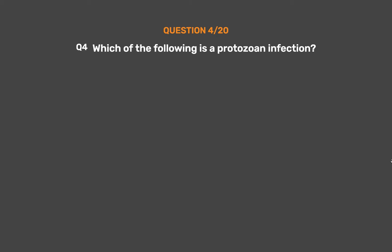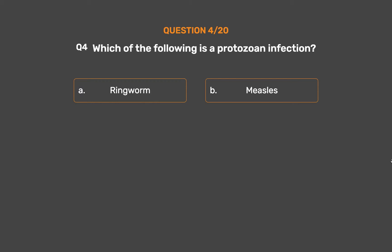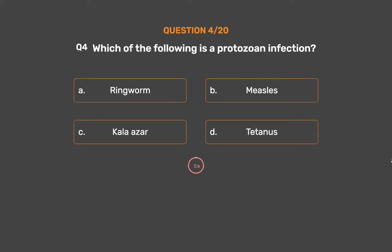Question number 4. Which of the following is a protozoan infection? Option A: Ringworm. Option B: Measles. Option C: Kalazar. Option D: Tetanus.